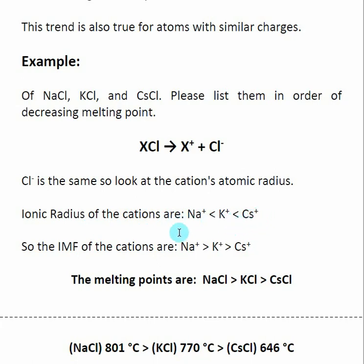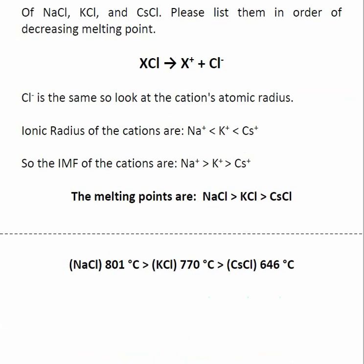As we go up the periodic table, the ionic radius decreases. So sodium has the smallest ionic radius and cesium has the largest. Because sodium is the smallest, it forms the strongest ionic intermolecular force. So sodium chloride has the highest expected melting point, then potassium chloride, then cesium chloride. If you look up the numbers: sodium chloride melts at 801°C, potassium chloride at 770°C, and cesium chloride at 646°C.